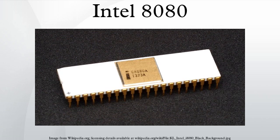The Intel 8080 was the second 8-bit microprocessor designed and manufactured by Intel, released in April 1974. It was an extended and enhanced variant of the earlier 8008 design, although without binary compatibility.